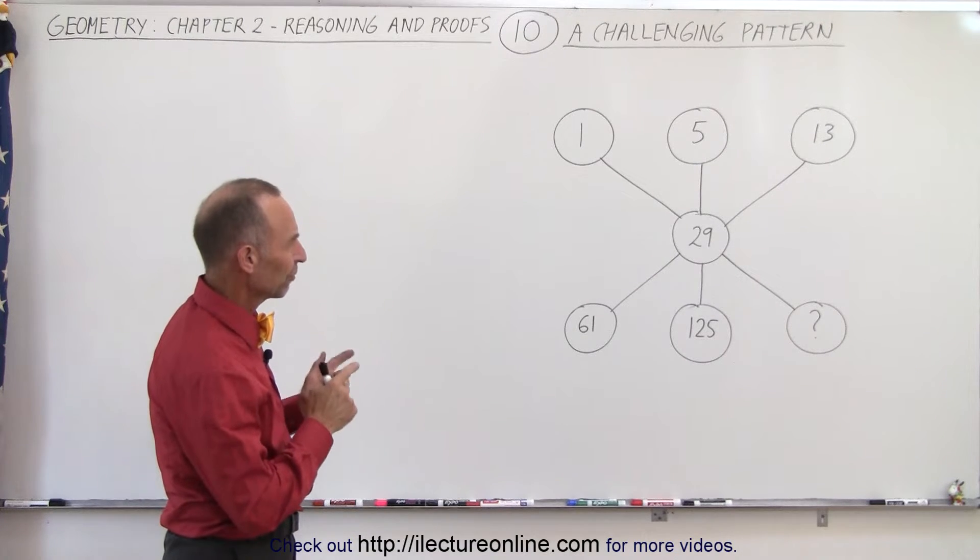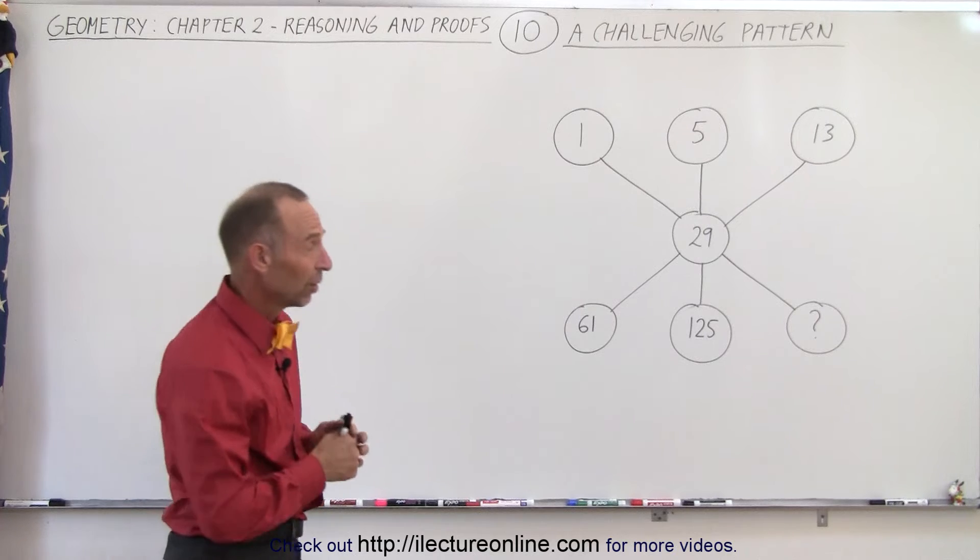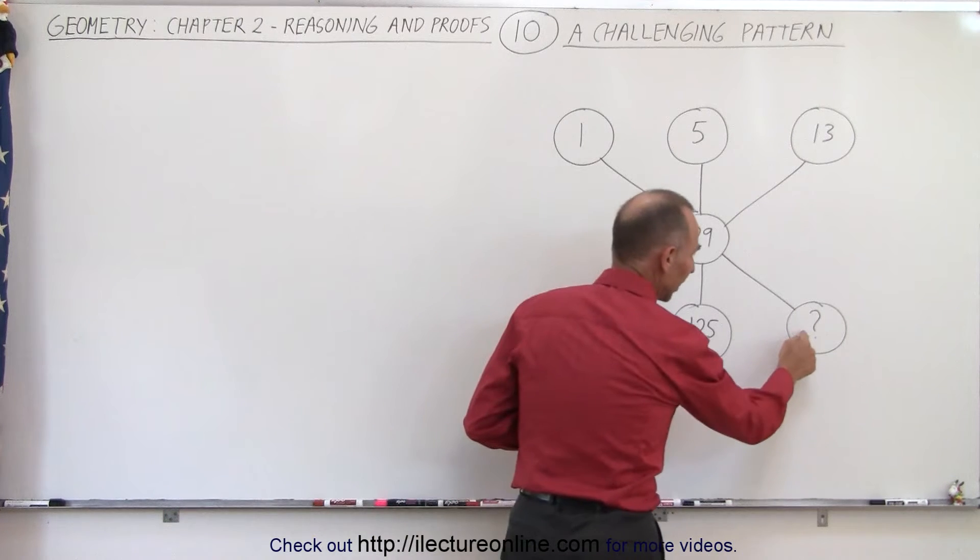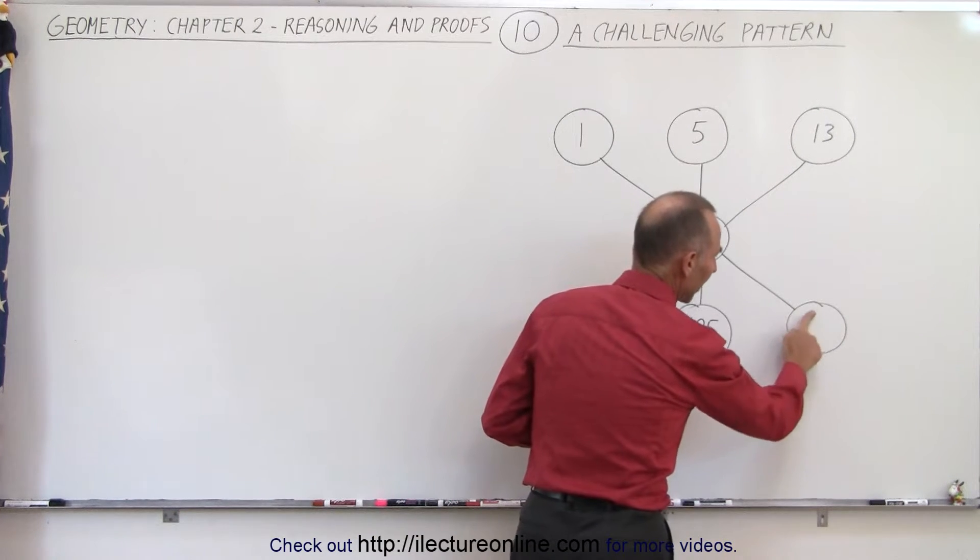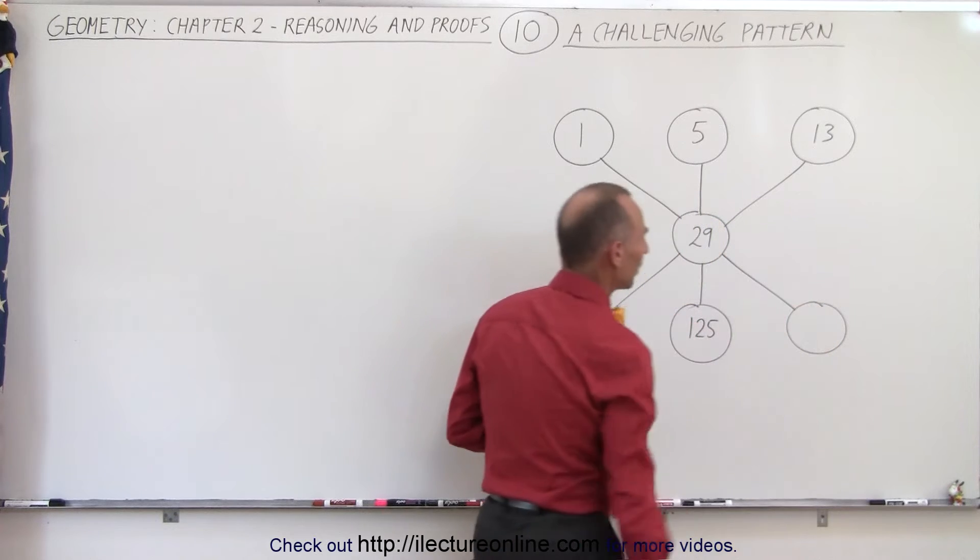We have 1, 2, 3, 4, 5, 6, 7 circles. One with an unknown number. That's what we're trying to solve. We're trying to figure out what needs to go in this particular circle.